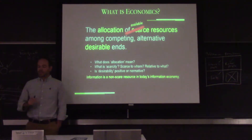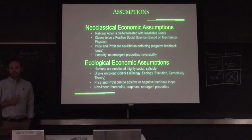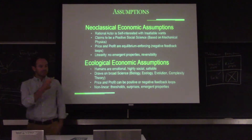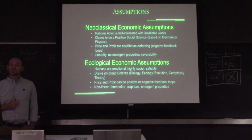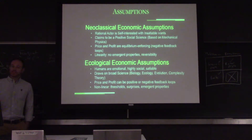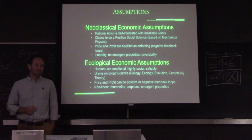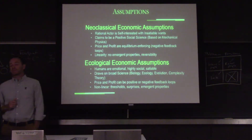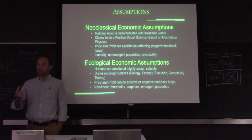Having an information economy, which is a non-scarce resource, challenges this whole definition of what economics is. The neoclassical assumptions are: the rational actor is self-interested with insatiable wants — we can never get enough. It tends to be a positive social science, largely based on mechanical physics and reversibility. Price and profit are these equilibrium-enforcing negative feedback loops. As Josh likes to say, the human mind has thousands of feedback loops, and it's crazy that we think the entire society, ecological system, and economic system can be maintained in equilibrium using just price as the only feedback loop. It's also based on linearity with no emergent properties.